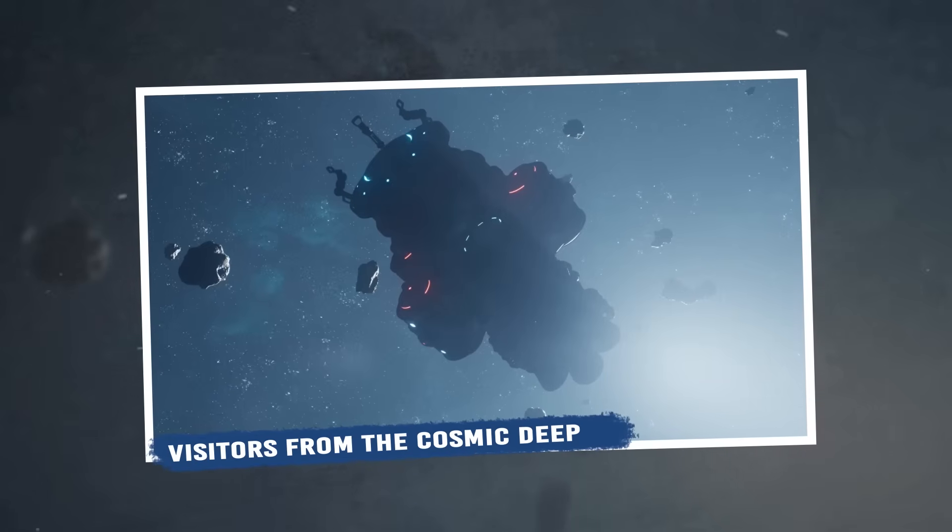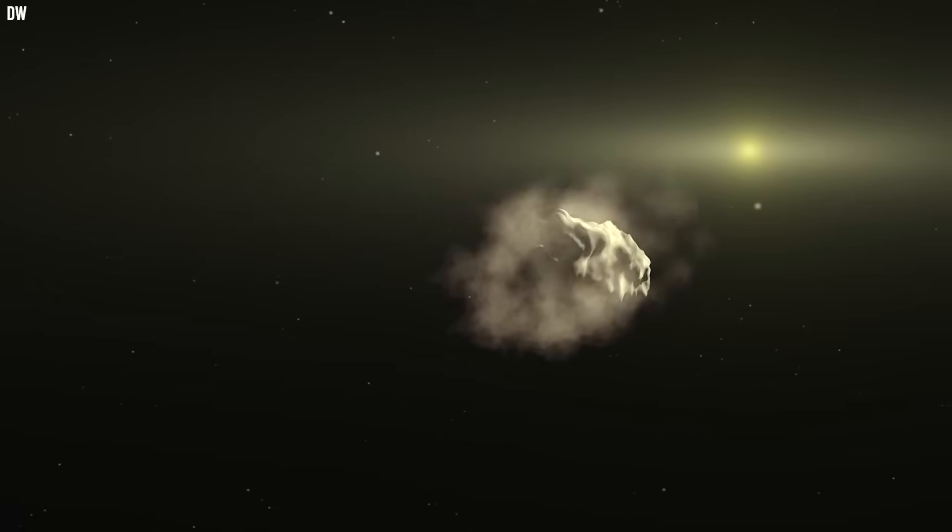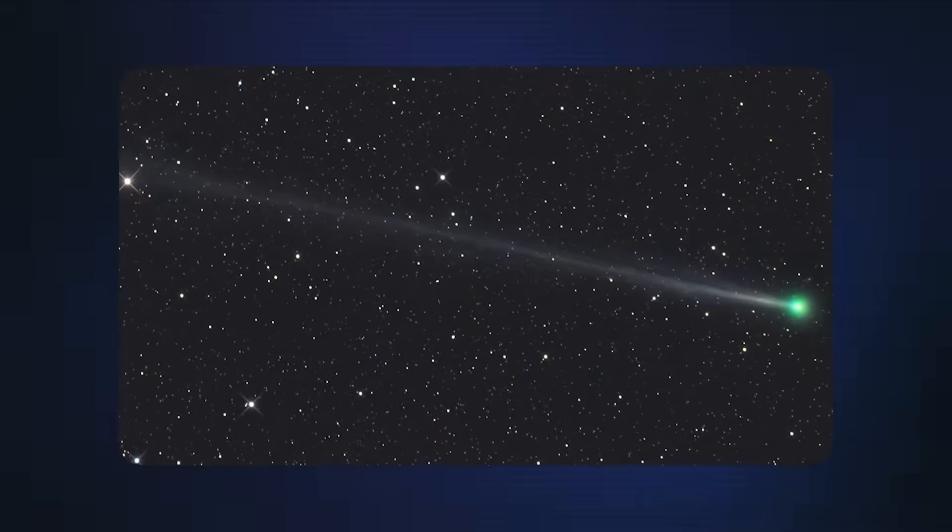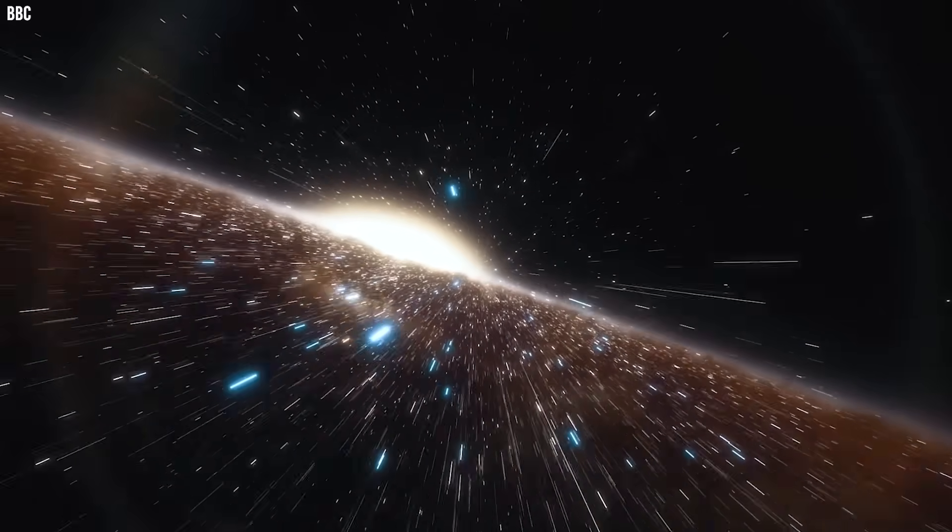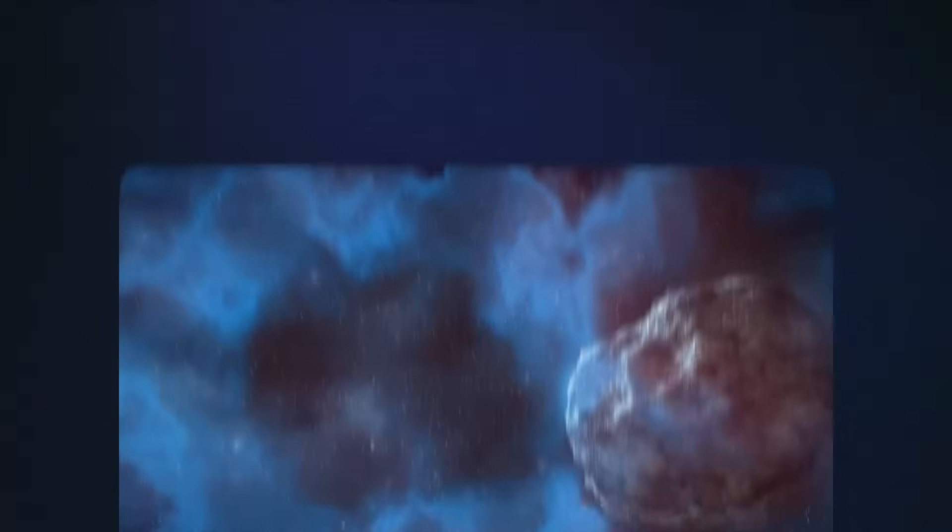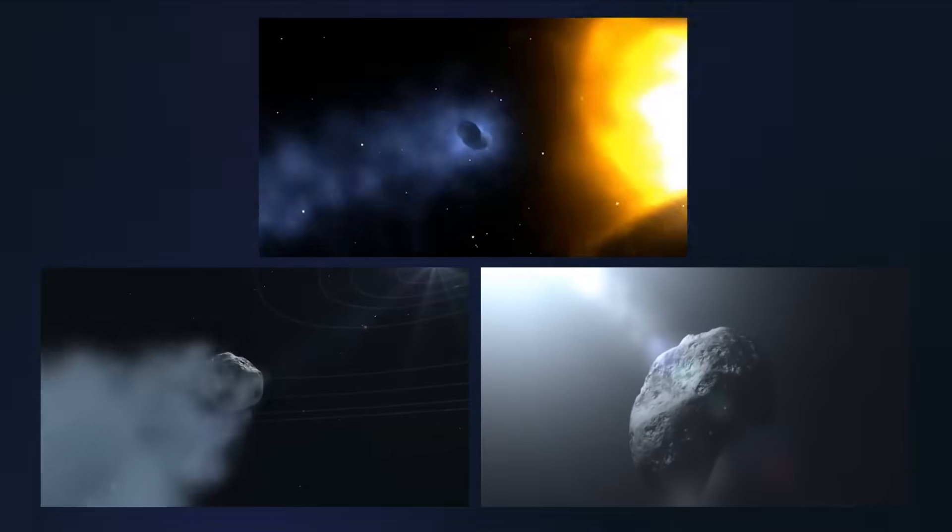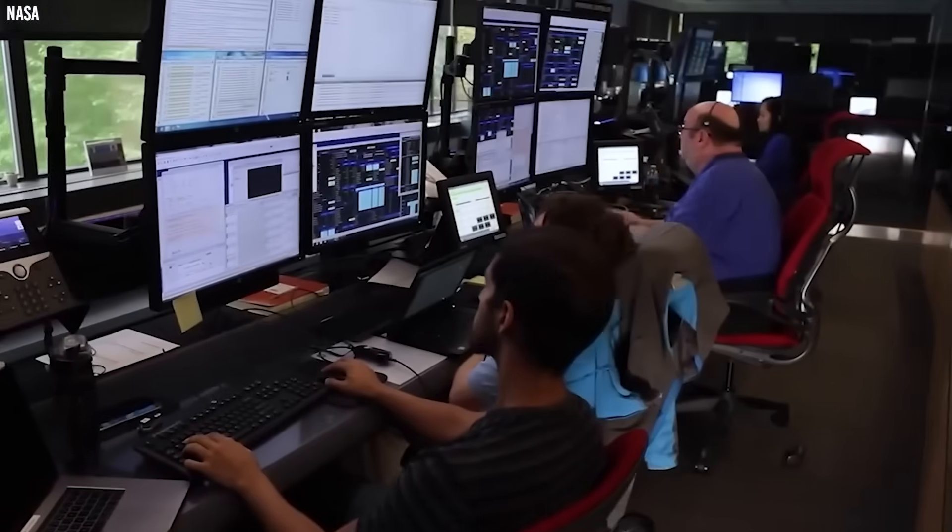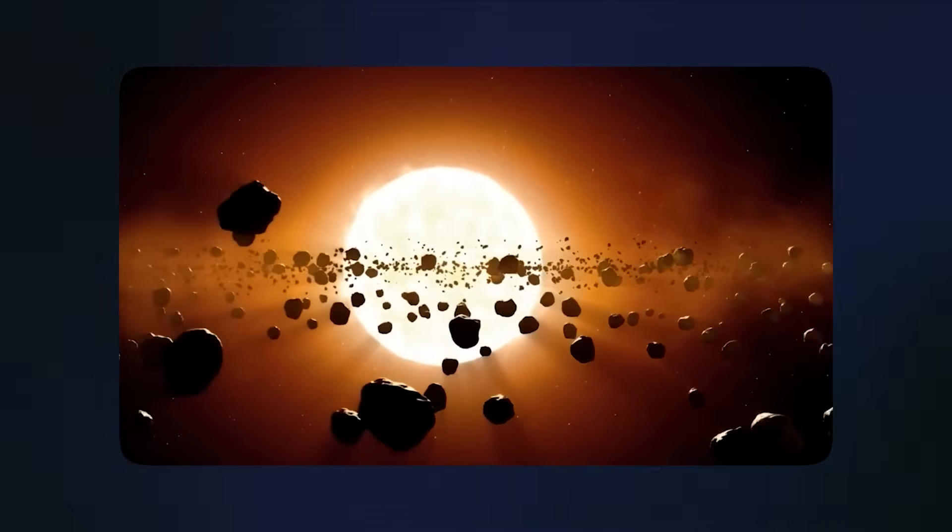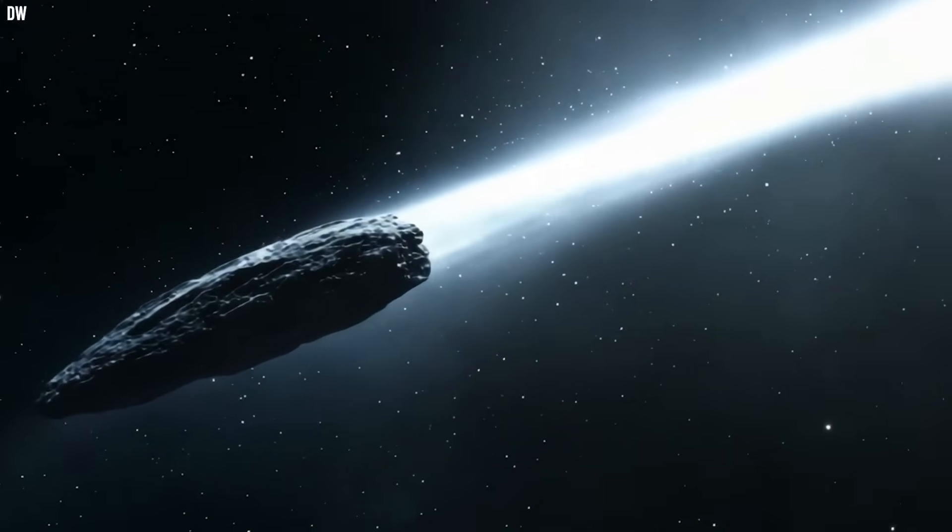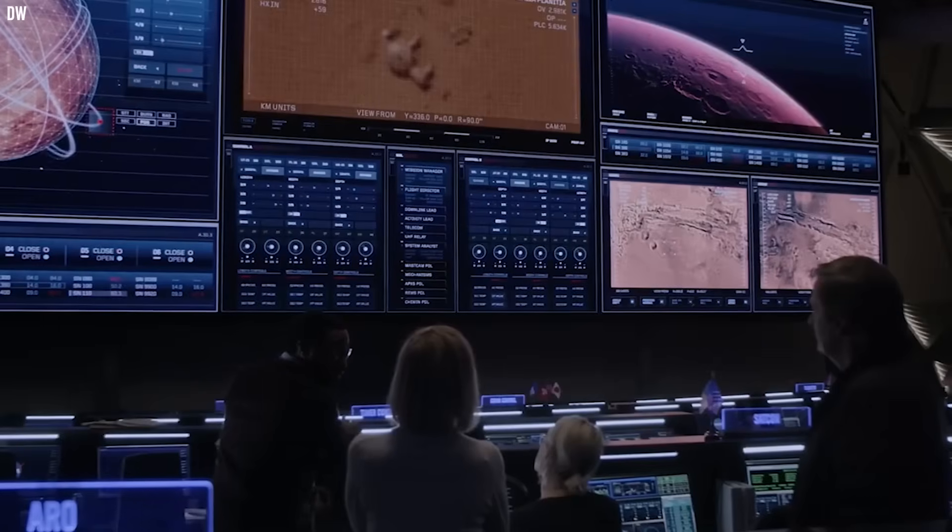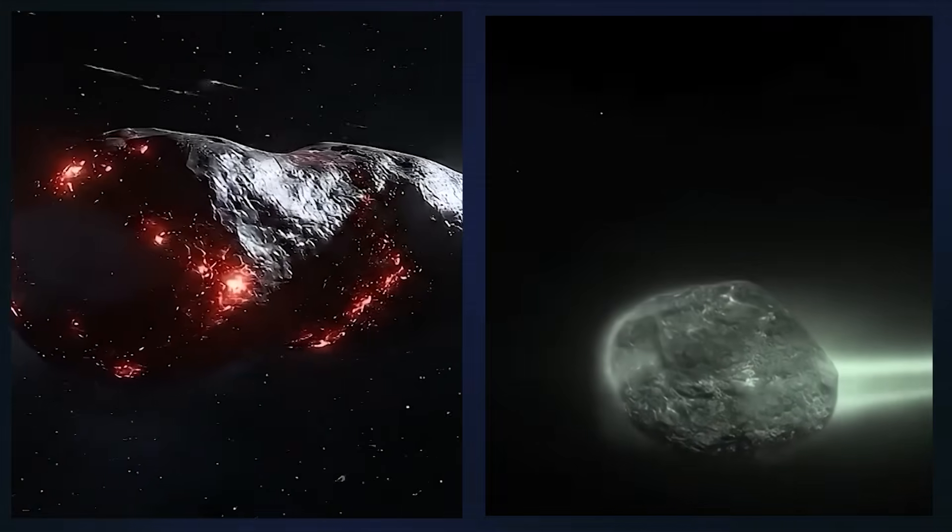Visitors from the cosmic deep. To truly appreciate why 3i Atlas is so remarkable, you need to understand just how rare these interstellar visitors actually are. Nearly everything we can see in our night sky was born right here in our solar system about 4.5 billion years ago. Planets, moons, asteroids and comets all formed from the same massive cloud of gas and dust that eventually became our sun. They have been orbiting and interacting with each other ever since, following predictable paths that we can calculate with amazing precision using the laws of gravity and motion.